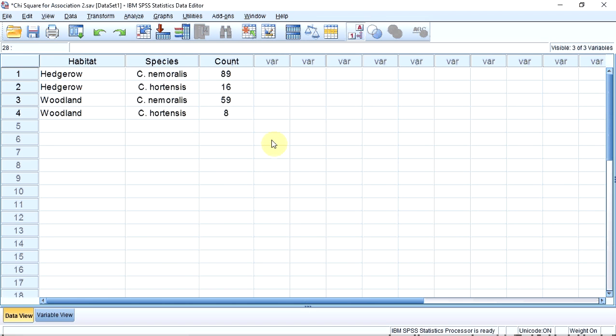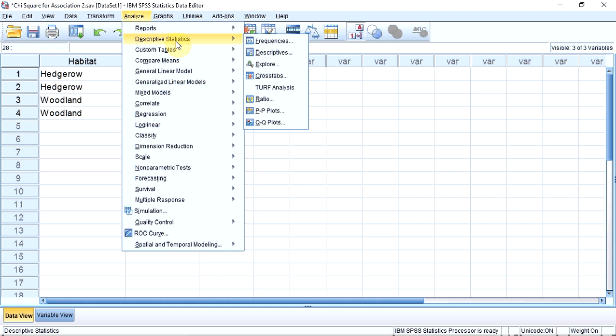So let's perform the chi-squared test for association. We do this by going up to the Analyze menu and click, down to Descriptive Statistics, and a submenu list should open. We then go to Crosstabs, short for cross-tabulation, and click.